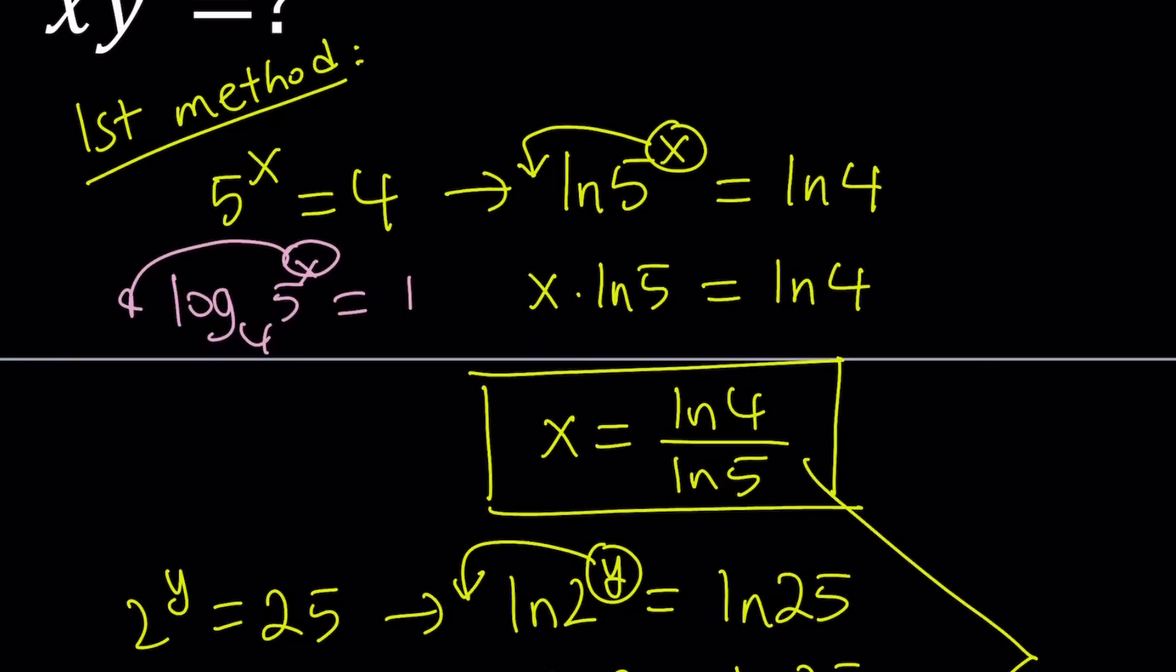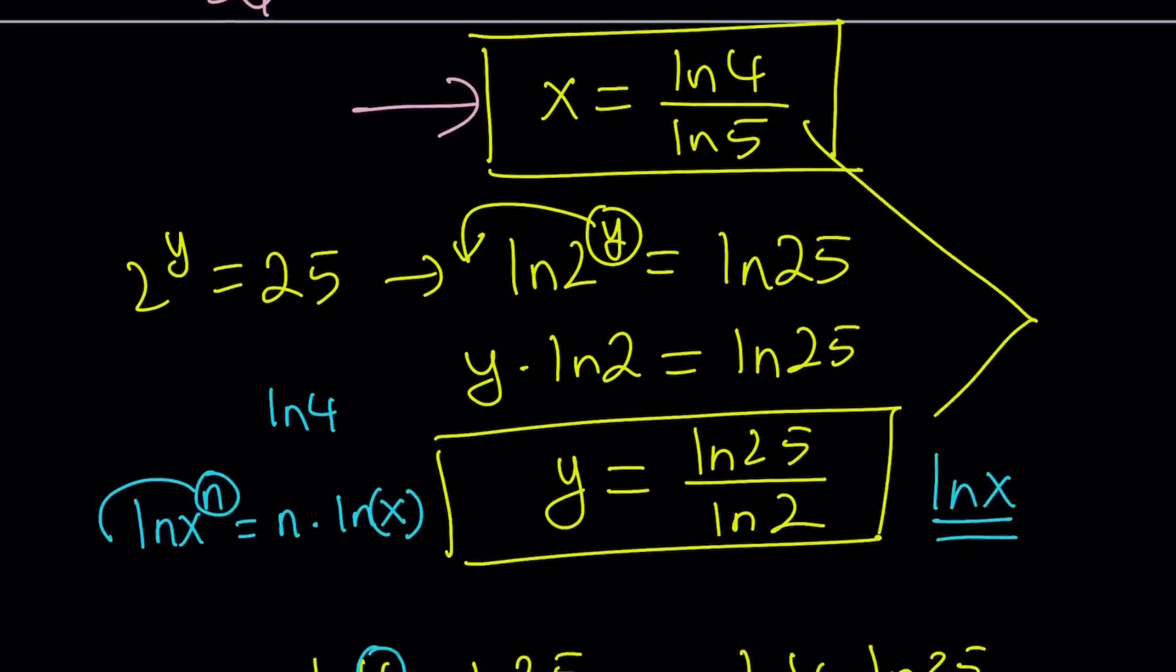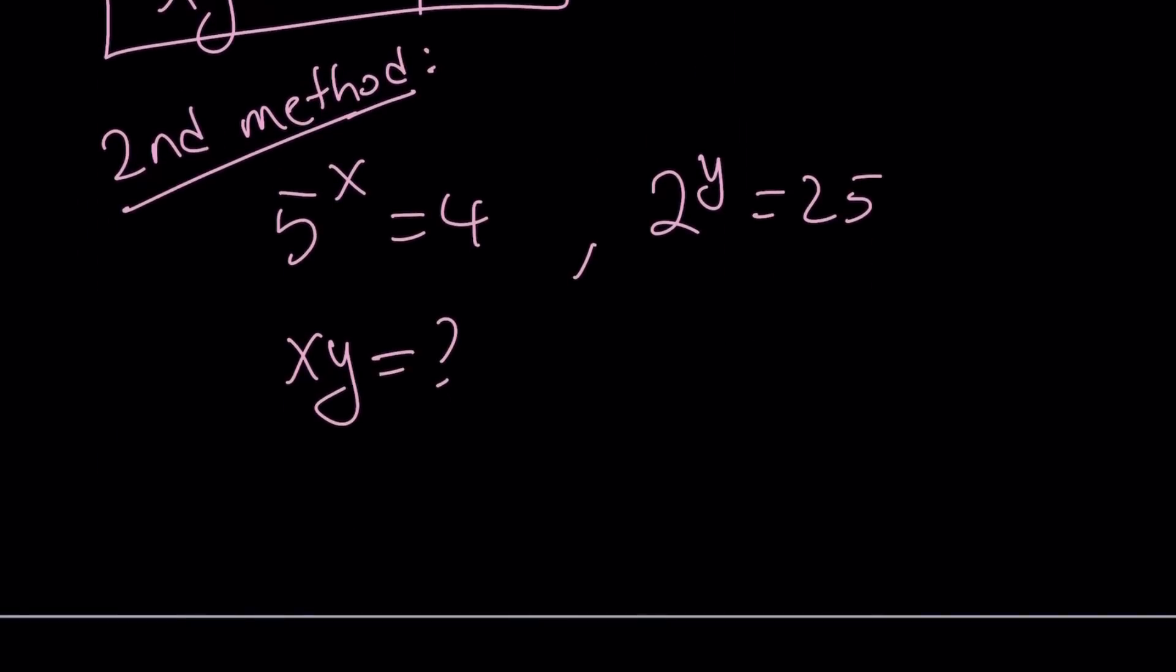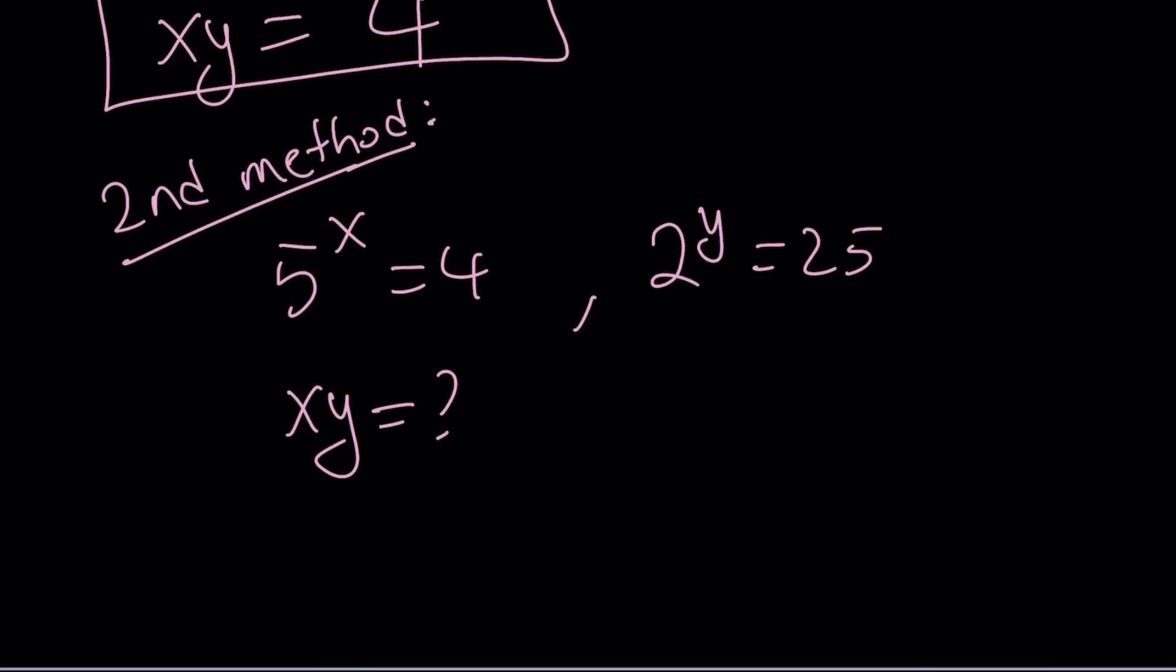But guess what? You could use change of base formula. But instead of using change of base, we could basically turn everything into ln directly. That way it's going to be a little easier. I find it easier. You can also use log base 10 if you want. Anyways, let's continue with the second method.